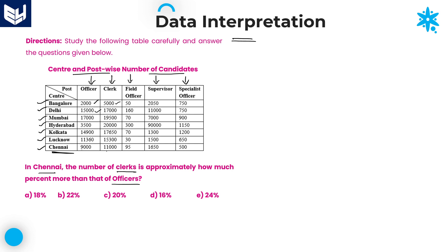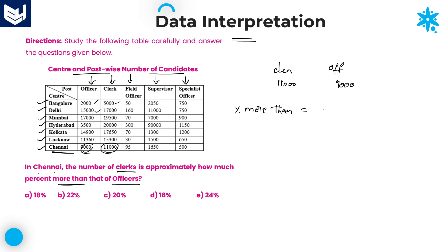The clerk's value is 11,000 — that is the number of clerks in Chennai. Comparing with officers, the number of officers is 9,000. The question is: 11,000 is how much percentage more than that of officers? You need to calculate percentage more than, which means: difference between those two values divided by the lesser value, multiplied by 100.